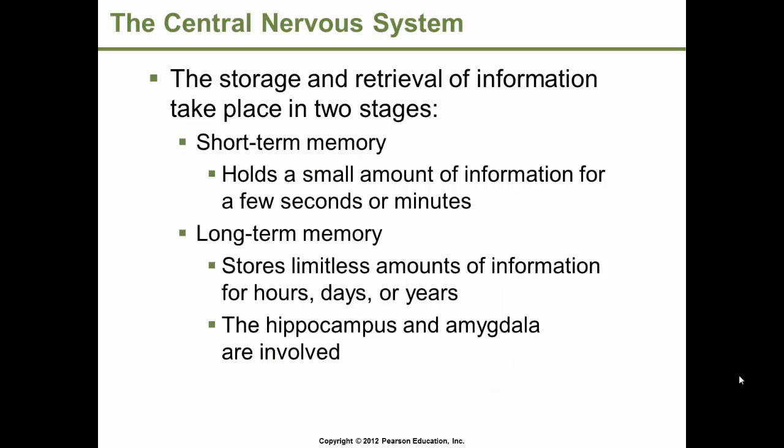The storage and retrieval of information take place in two stages: short-term and long-term memory. Short-term memory holds a small amount of information for a few seconds, such as looking up a phone number. Long-term memory stores limitless amounts of information for hours, days, or years. The hippocampus and amygdala are involved in long-term memory.